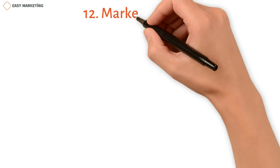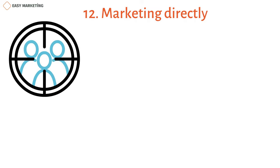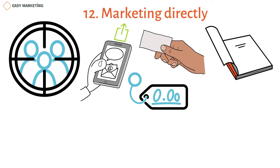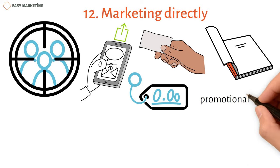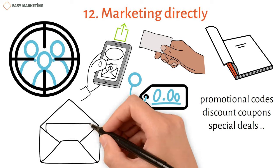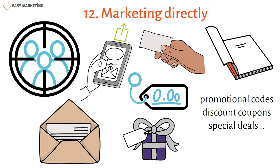Number twelve: direct marketing. With direct marketing, you can target specific clients if you know who they are, which makes it very different from mass marketing methods. Customers are happy to get mail, postcards, catalogs, and coupons for discounts. This method works well for businesses that depend a lot on repeat customers, such as those that use promotional codes, discount coupons, and special deals. If you know the customer well, you can even add a personalized note. You could send them a coupon or a small gift for their birthday or anniversary, building long-term brand loyalty.